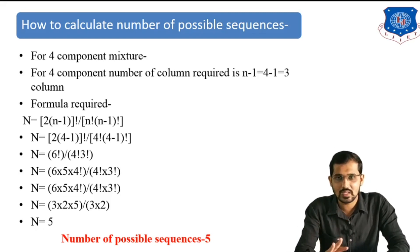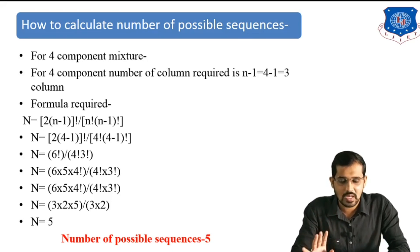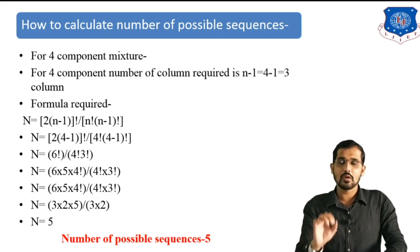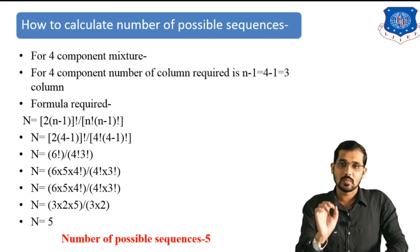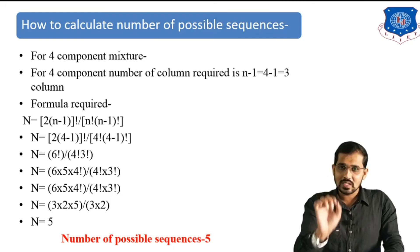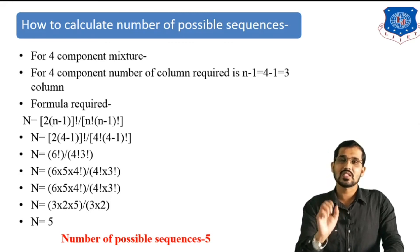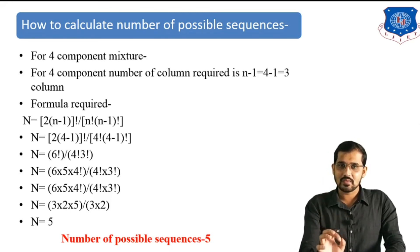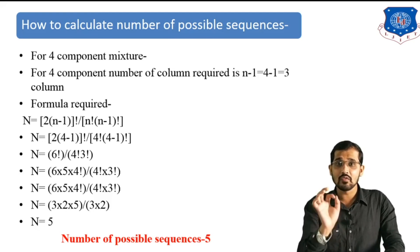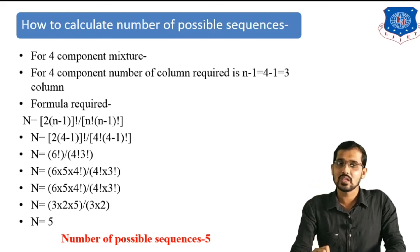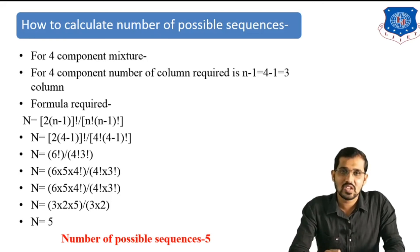A three-mark question can be asked about the number of possible sequences, and a seven-mark question can be asked about the full marginal vapor rate method — where you draw all the figures, calculate the number of possible sequences, and find the best sequence. The best sequence is the one with the minimum effective MVR value. This is all about the marginal vapor rate method. We will see the next topic in the next lecture. Thank you very much.